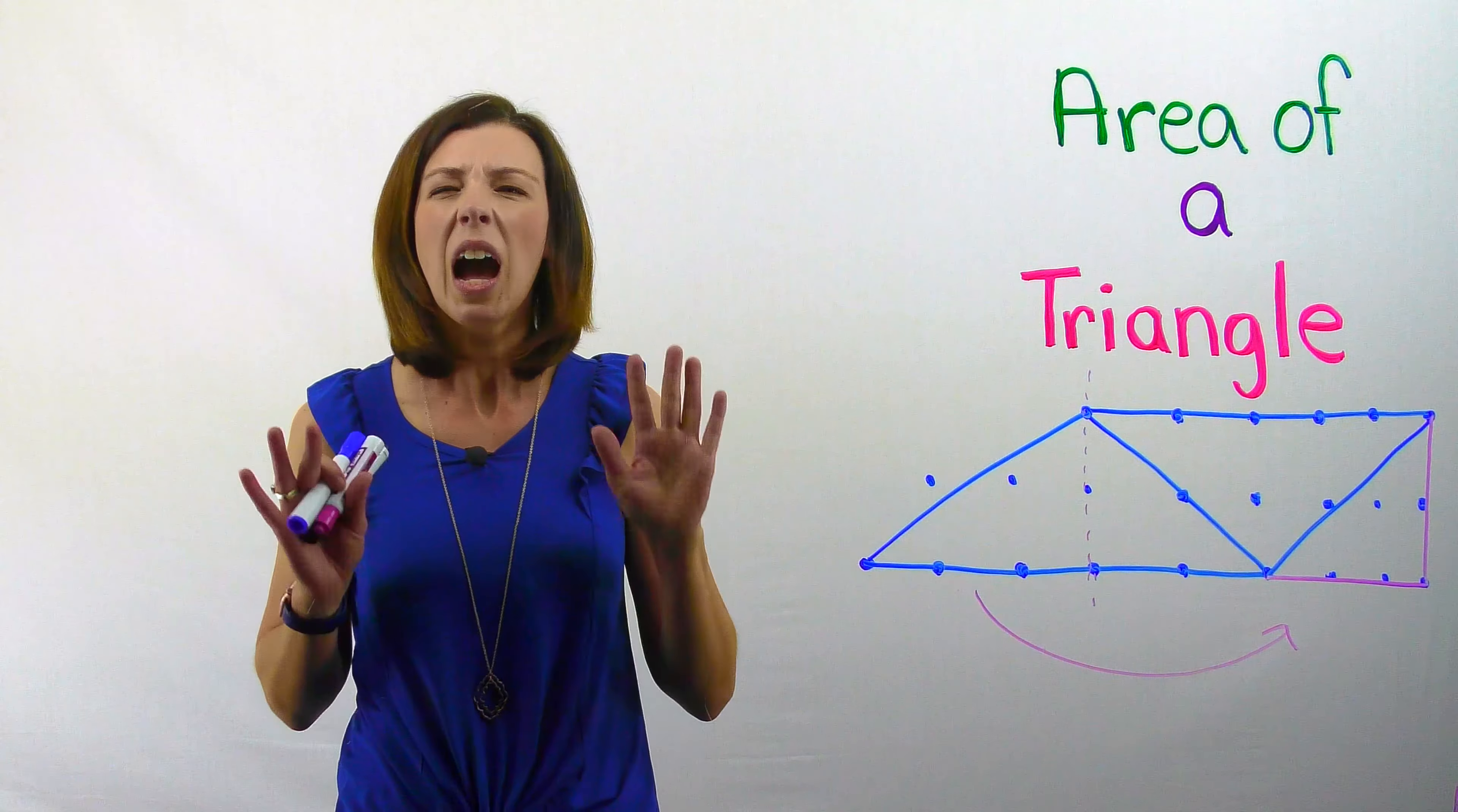I'm running out of room here and so I'm having to squish this on the end, but you get the picture. I'm taking this triangle and I'm going to move it over here. So now I can see that I have the base times the height to find my area for this parallelogram.